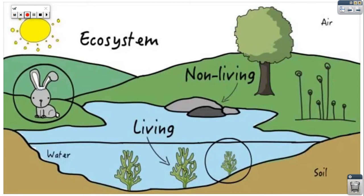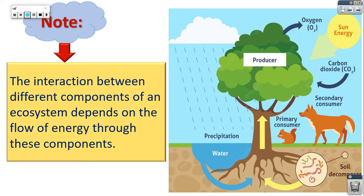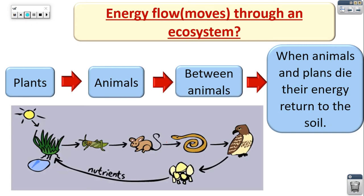So all the components of the ecosystem have relations between them. These relations we call interaction. The ecosystem is an area or community that contains living organisms and non-living things, and between them there is interaction. Now we will see the energy flow between different living organisms in the ecosystem.